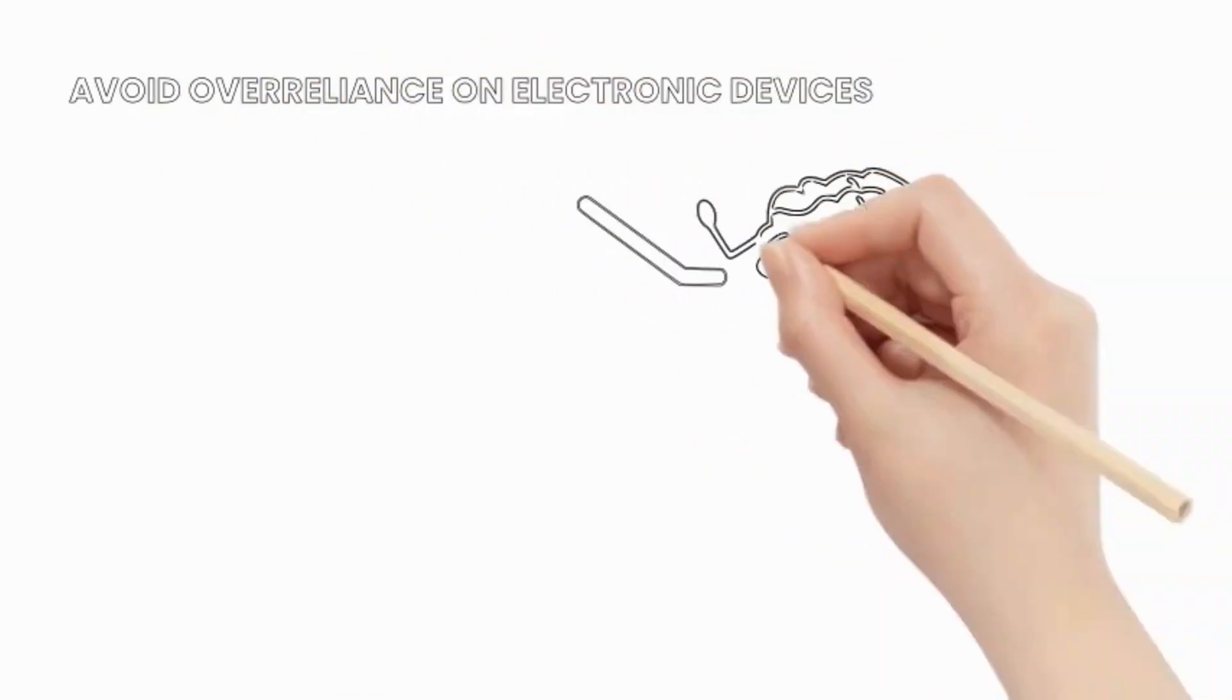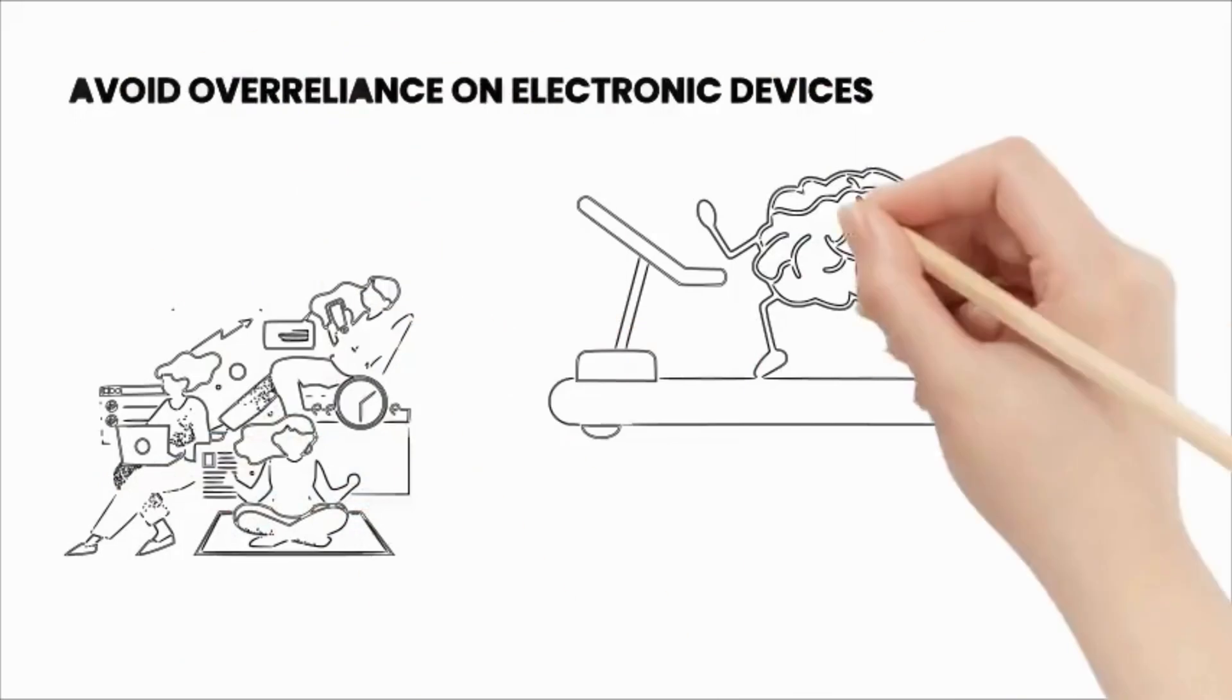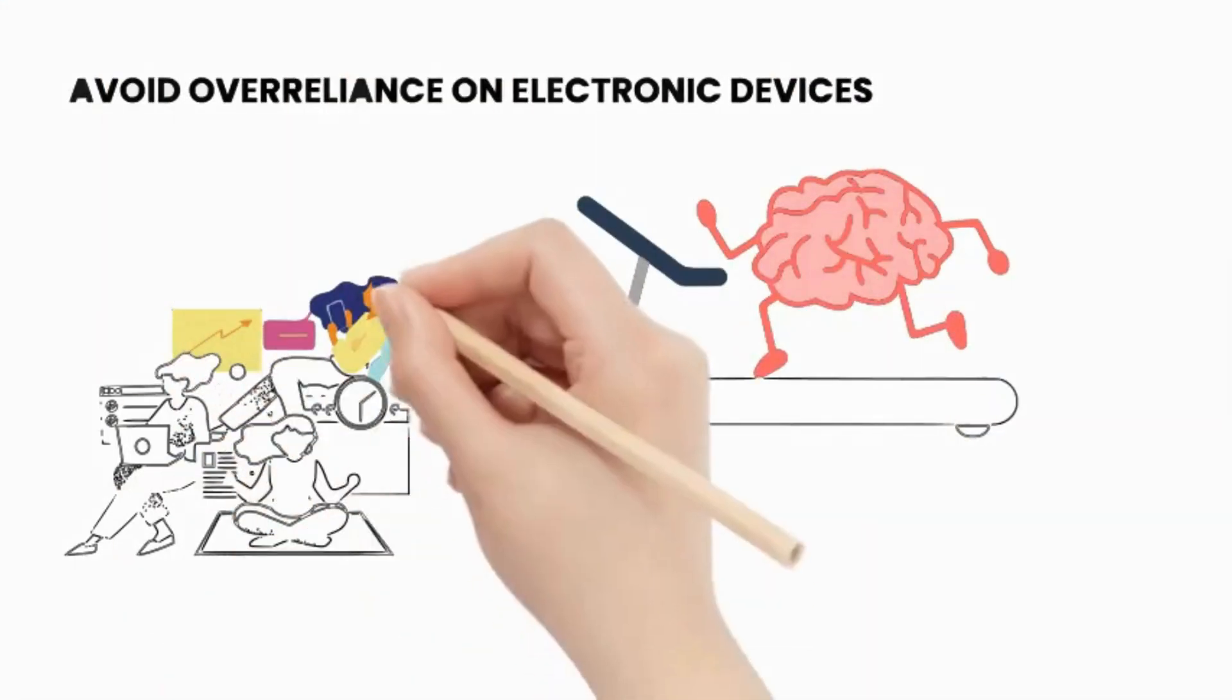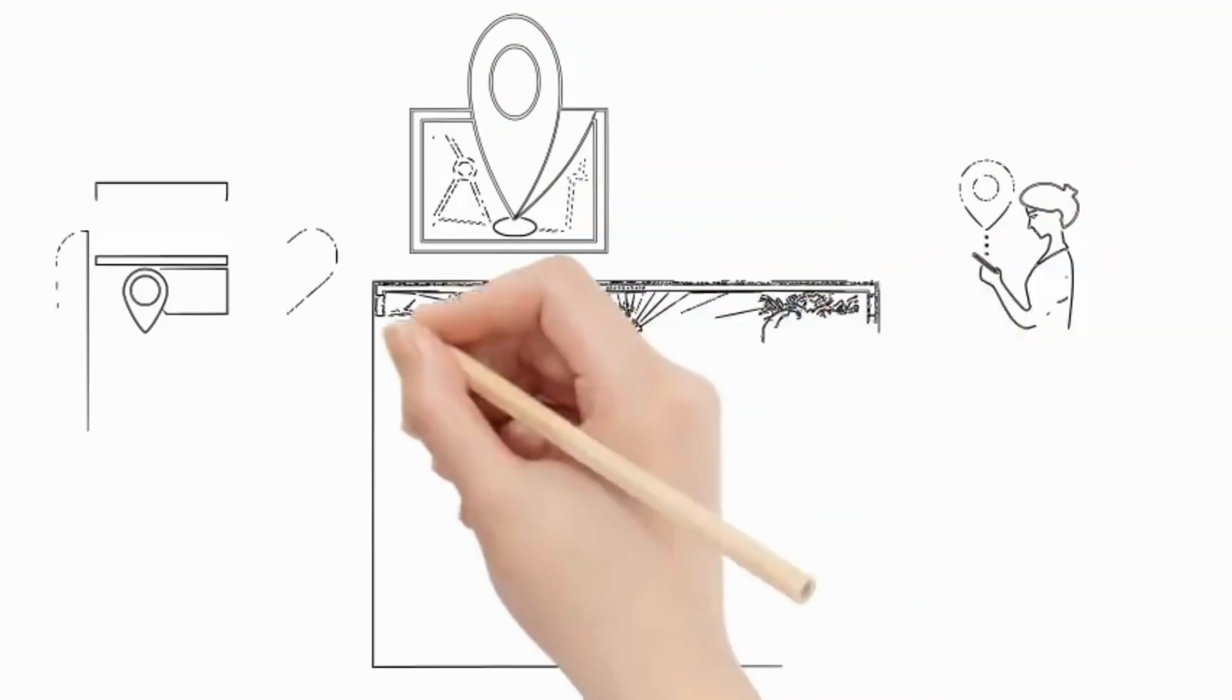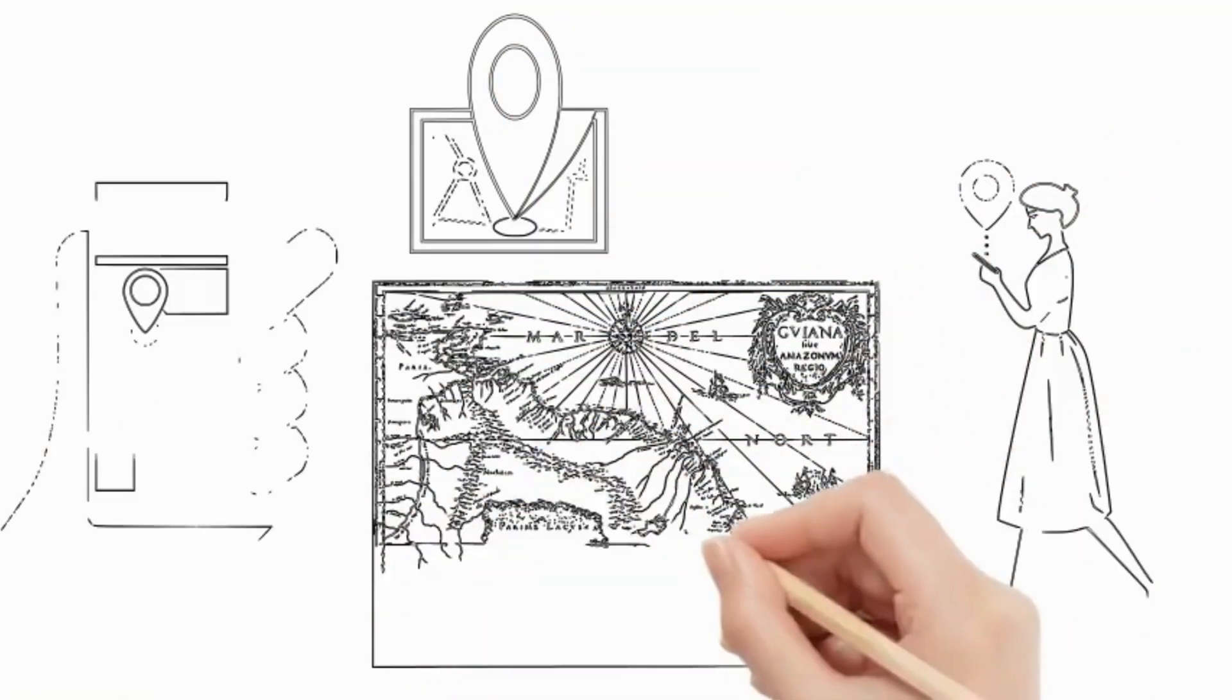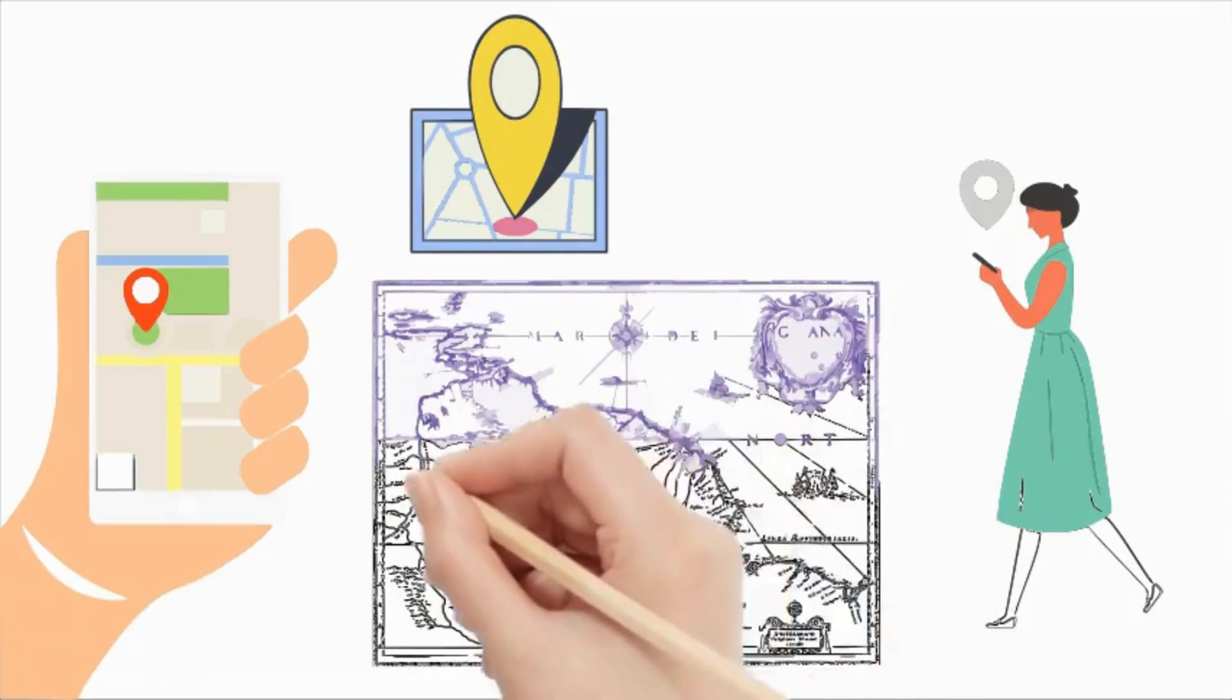Avoid over-reliance on electronic devices: As modern life progresses, people are becoming increasingly dependent on electronic devices, which diminishes opportunities for brain activity. For instance, many individuals rely on digital maps like Google Maps and neglect the habit of memorizing directions to various locations.